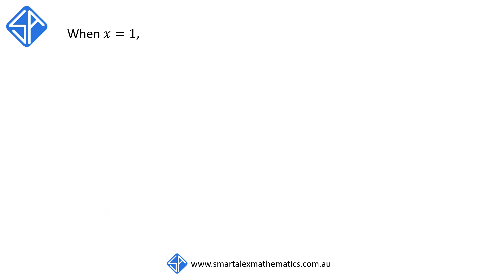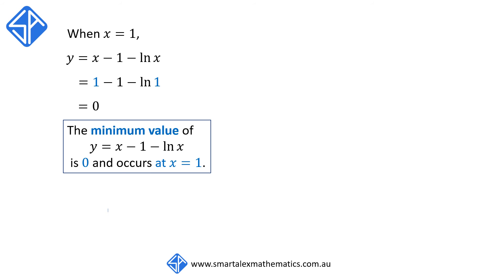Now that we have the x coordinate of the stationary point at x is equal to 1, we're going to substitute this value into the function y is equal to x minus 1 minus log of x to find the minimum value of this function. Substituting x is equal to 1, we get y is equal to 1 minus 1 minus log of 1, which evaluates to 0. So the minimum value of y is equal to x minus 1 minus log of x is 0 and occurs at x is equal to 1.